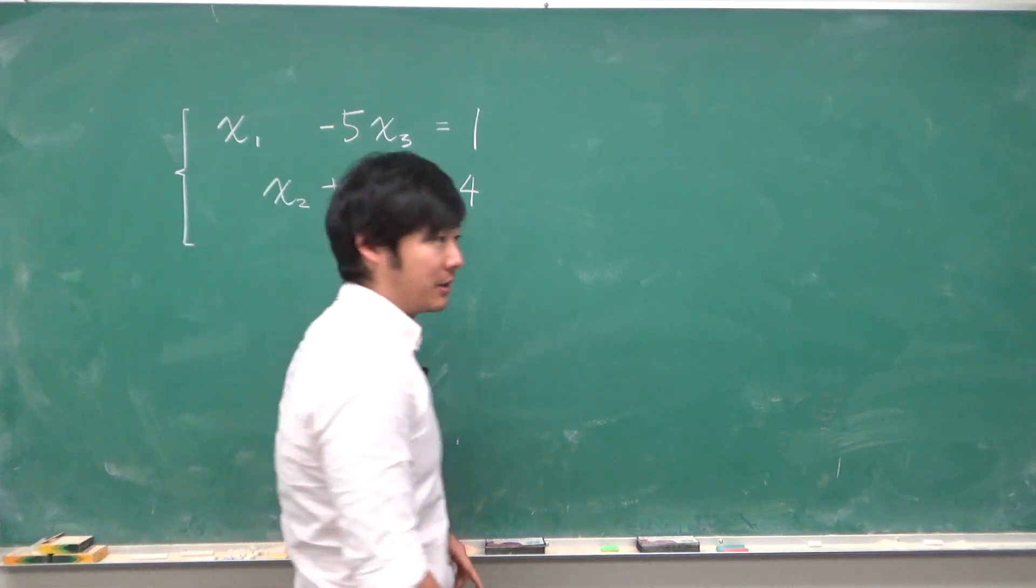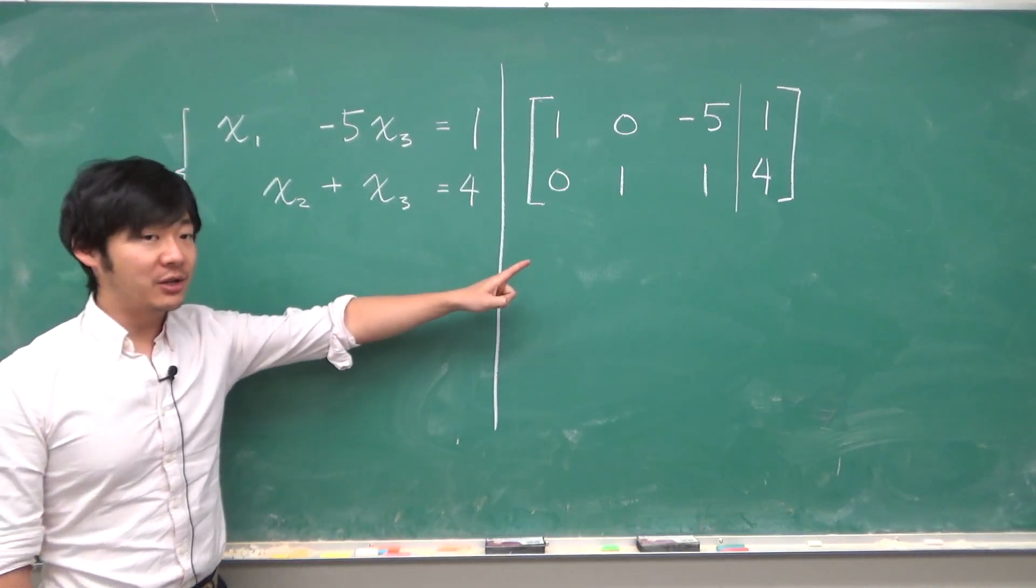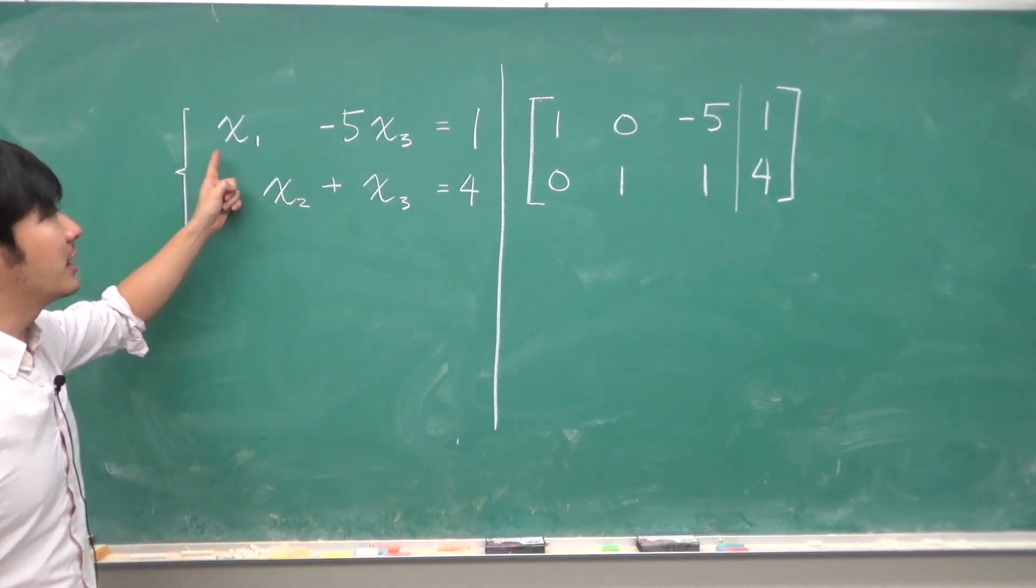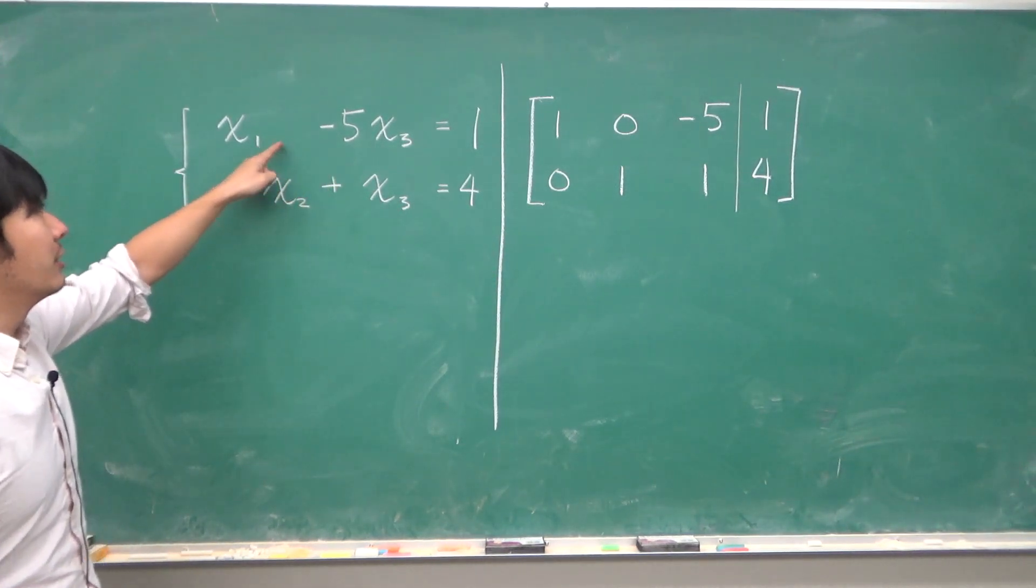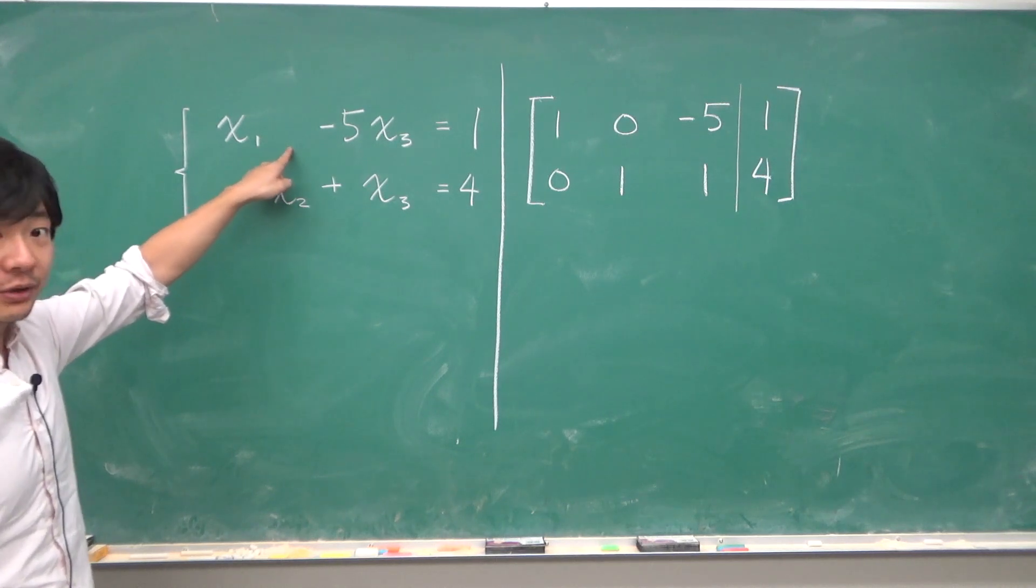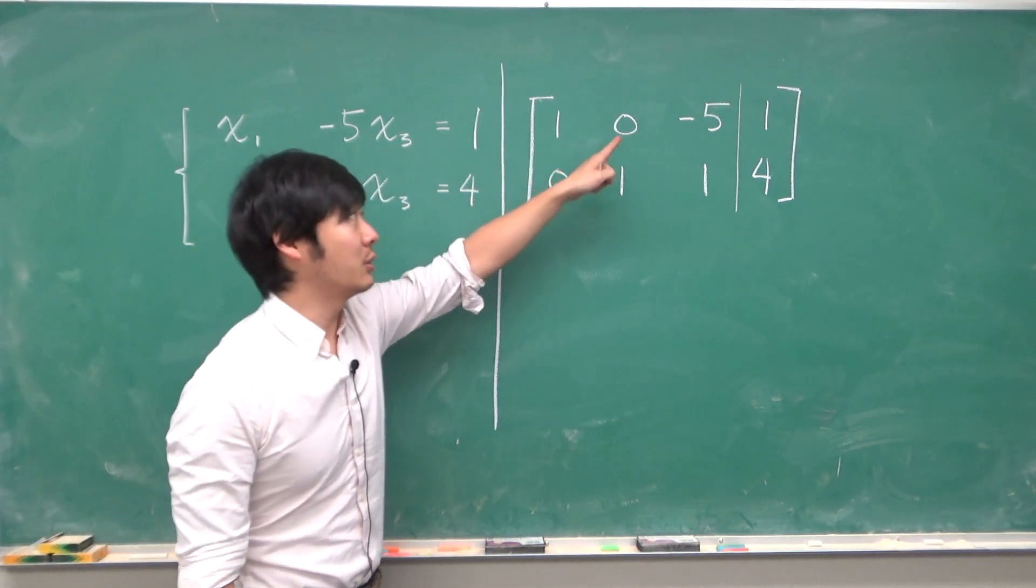Each number in the matrix corresponds to the coefficient in front of each of the variables. There is no x2 in the first equation, so that's why there's a 0 in the x2 position.